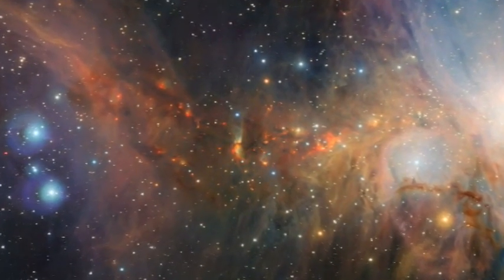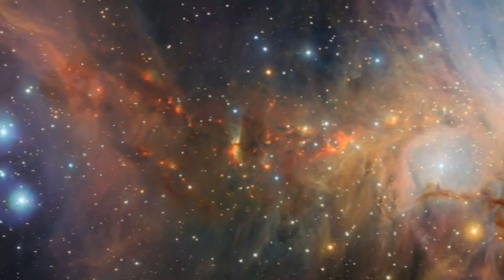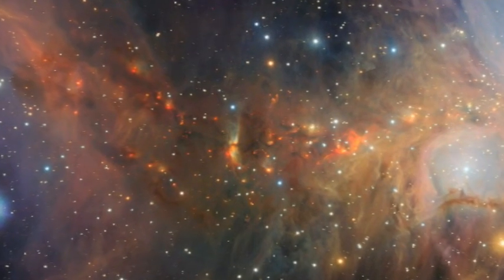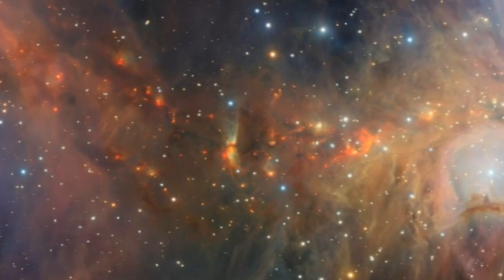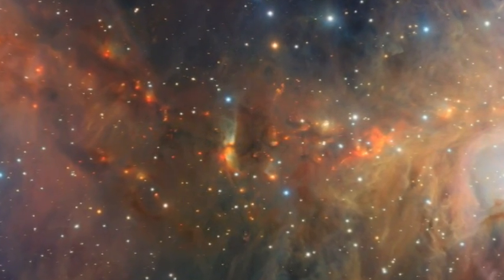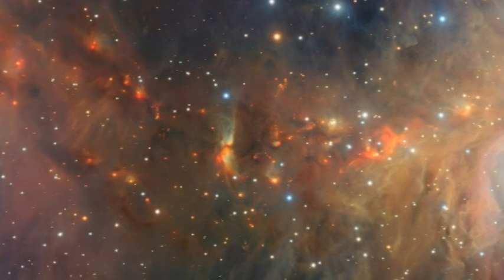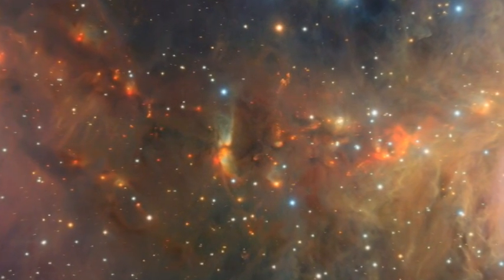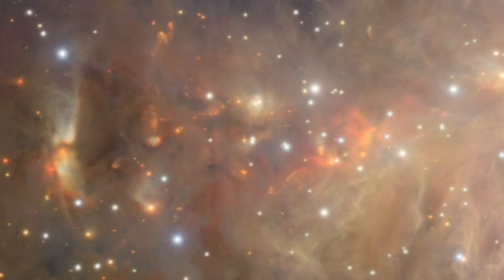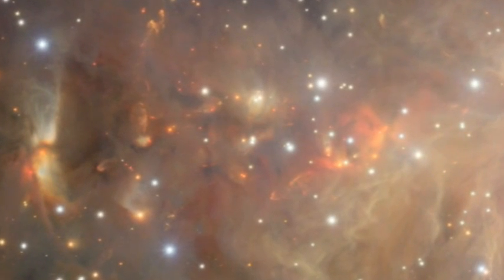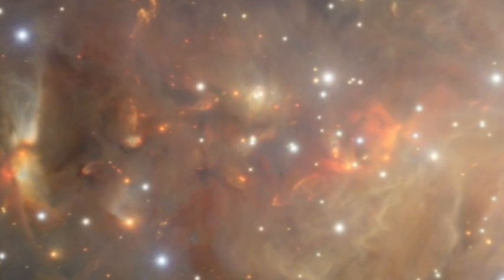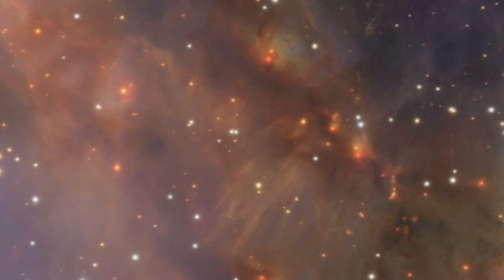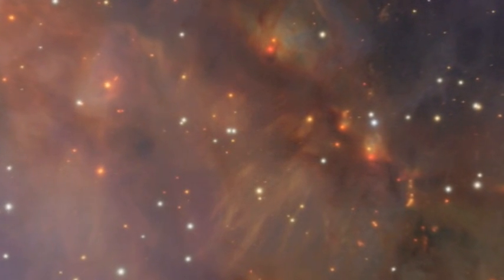In this dusty region of the nebula, gas jets shot out by young stars at around 700,000 km an hour have collided with the surrounding gas and dust, exciting it and sculpting strange red shapes. Normally invisible, these curious wisps provide important clues for astronomers as they try to understand how stars are born and what happens in their early years.